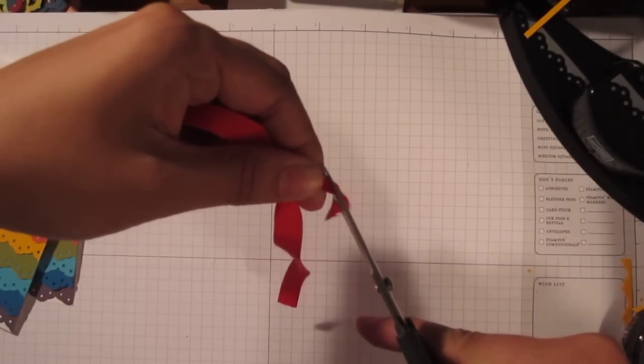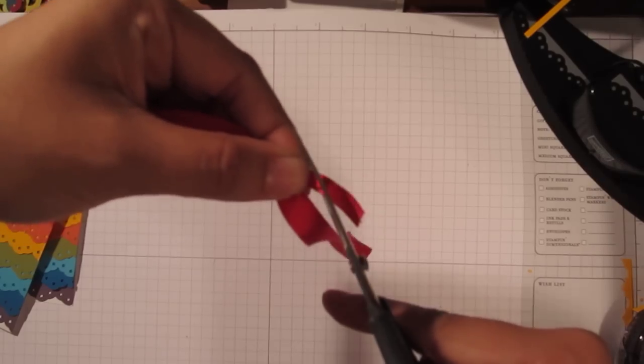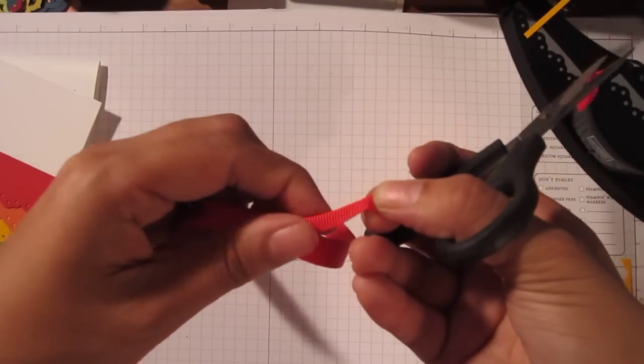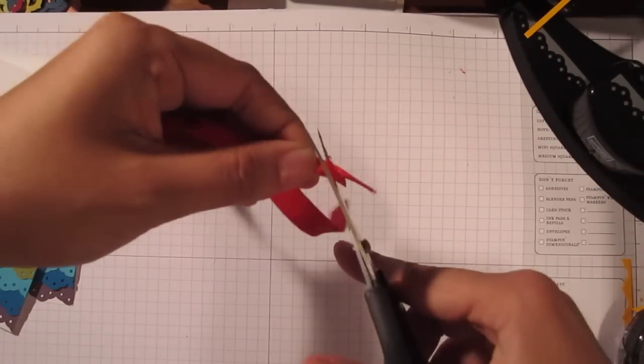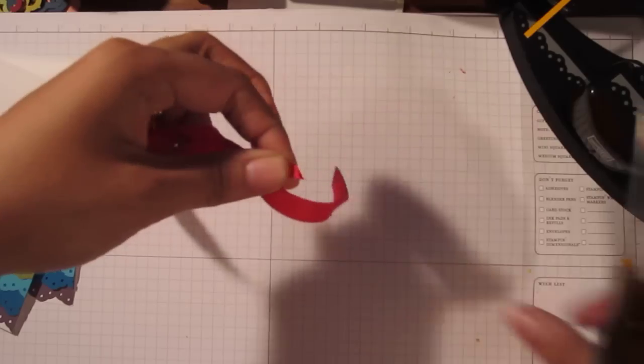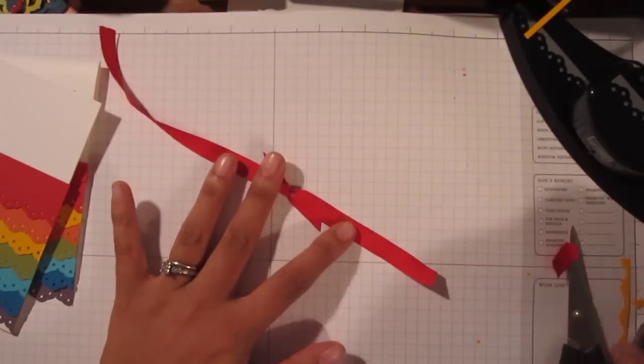So let me get those cut. Just going to fold it in half and snip it at an angle. And then apply some snail on the back of my ribbon.